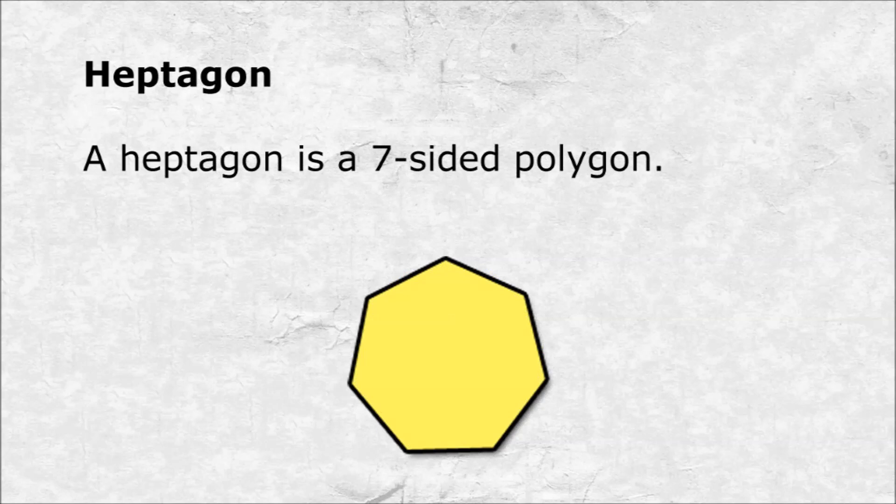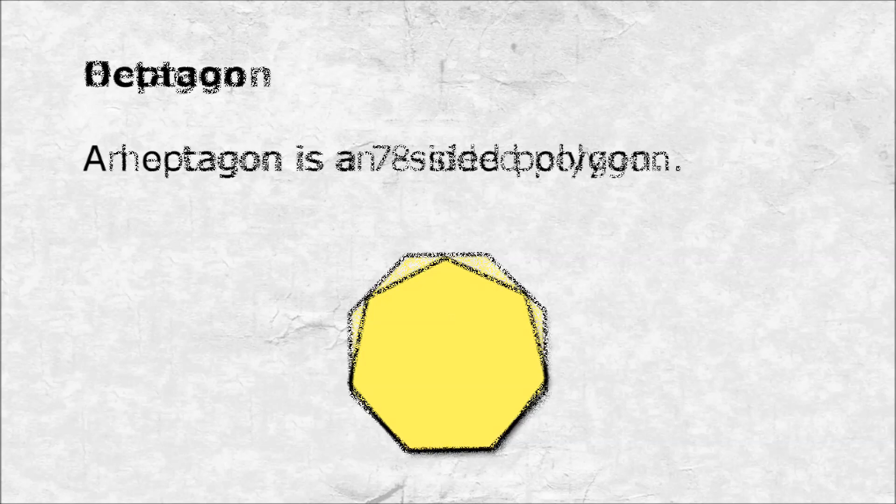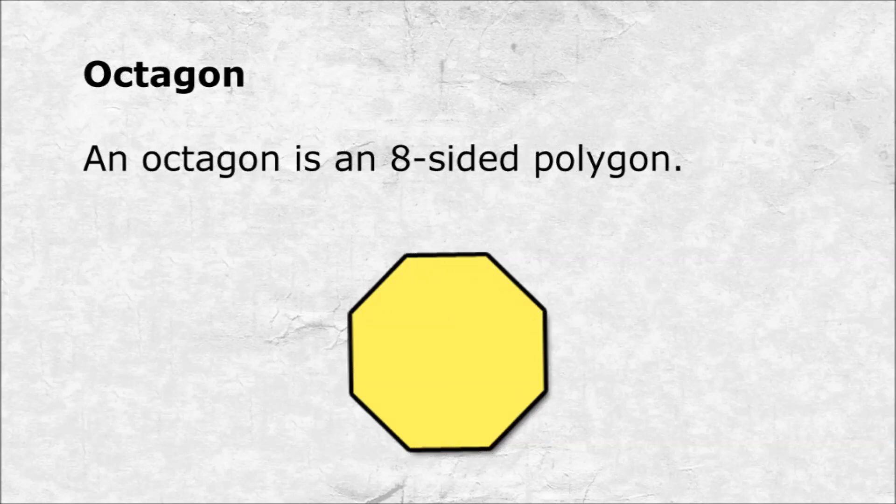Heptagon. A heptagon is a seven-sided polygon. Octagon. An octagon is an eight-sided polygon.